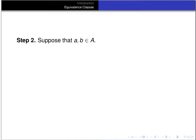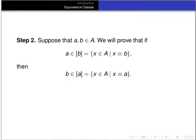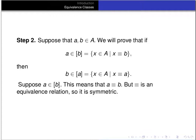Now suppose A and B are elements of the set A. We want to prove that if A is an element of the equivalence class of B, then B is an element of the equivalence class of A. The equivalence class of B is the set of all elements related to B. Suppose A is in the equivalence class of B — that means A is related to B. Since this is an equivalence relation, it's symmetric, so B is related to A. That means B is in the equivalence class of A.